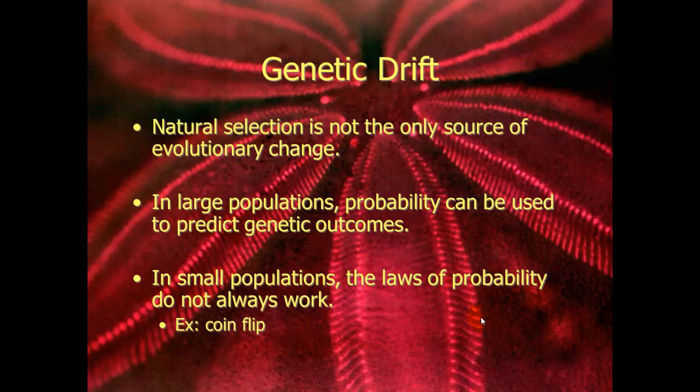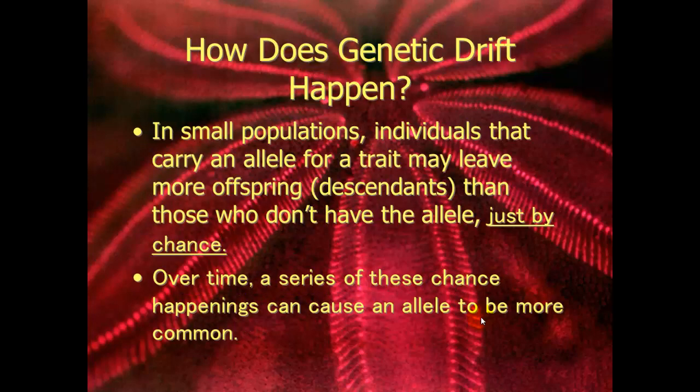Natural selection is not the only way that evolution can happen. Genetic drift happens when populations change through probability. In large populations, probability predicts genetic outcomes. In small populations, laws of probability don't work because there's not a large pool of different alleles. Individuals carrying an allele may leave more offspring than those who don't, just by chance, and over time those alleles just become more common.